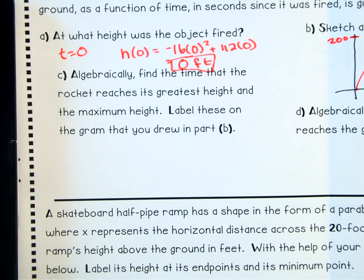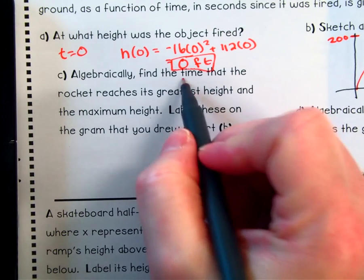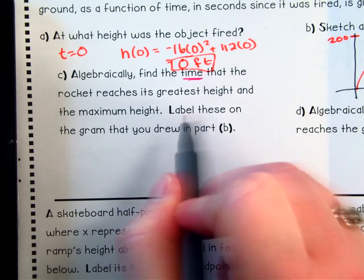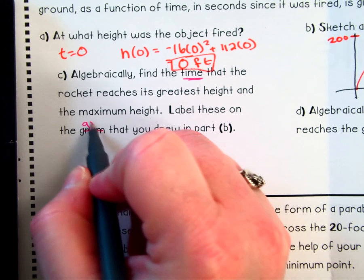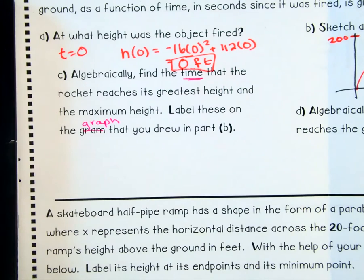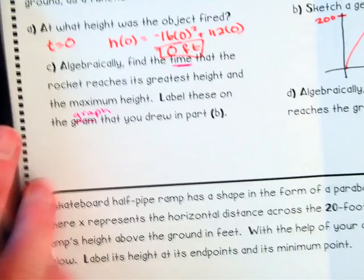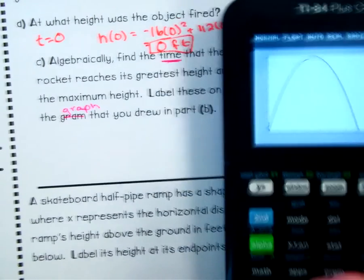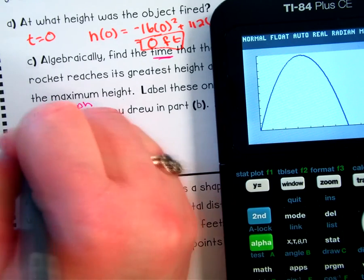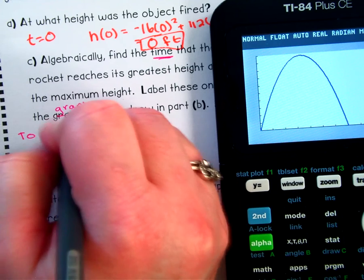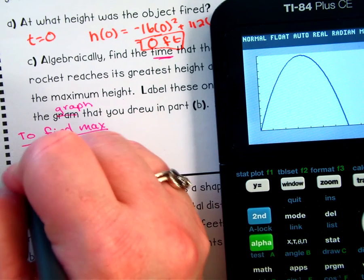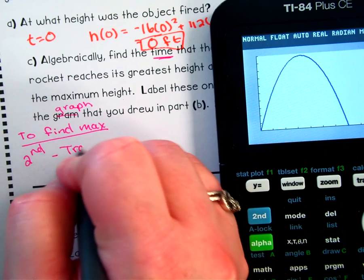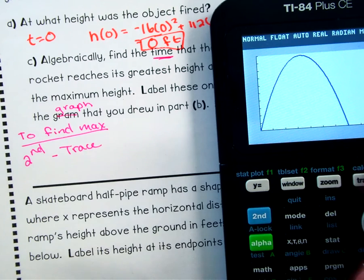See, find the maximum height... Or no, find the time that the rocket reached its greatest height and the maximum height. Label these on the graph that you drew in part B. So what I'm going to teach you is in the calculator... We'll write a little note here. Find max. So to find your maximum in your calculator, push the second button and then put trace.